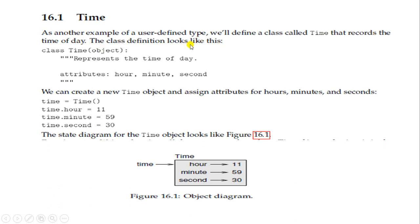The class definition looks like this. The class is Time. The object represents the time of a day, and its attributes will be hour, minute, and second. We can create a new Time object and assign attributes for hours, minutes, and seconds. This is the object diagram showing the Time object with its three attributes.